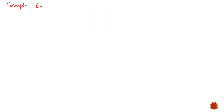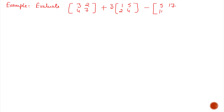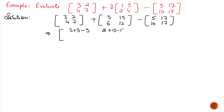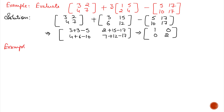Always remember that in order to add or subtract, the order of the two matrices must be the same. Evaluate [3, 2; 4, 7] + 3·[1, 5; 2, 4] − [5, 17; 10, 17]. The order of the given matrices is 2×2. First multiply the second matrix by 3 to get [3, 15; 6, 12], and now add and subtract the corresponding elements: 3+3−5, 2+15−17, 4+6−10, and 7+12−17. The answer is [1, 0; 0, 2], a 2×2 matrix.